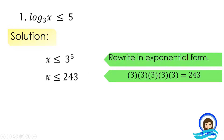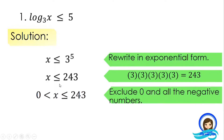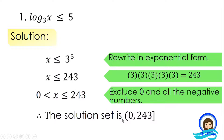Therefore, x is less than or equal to 243. We exclude 0 and all negative numbers for this expression to be defined. That is why the solution set is from 0 to 243. We use the bracket symbol because 243 is included in the solution set, due to the less than or equal to symbol.